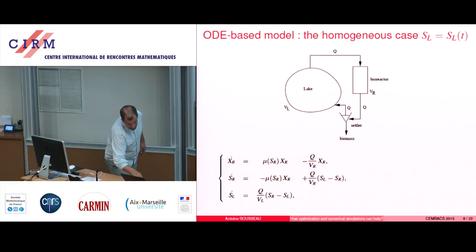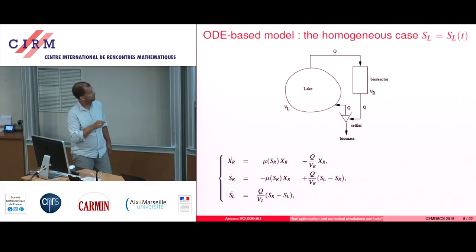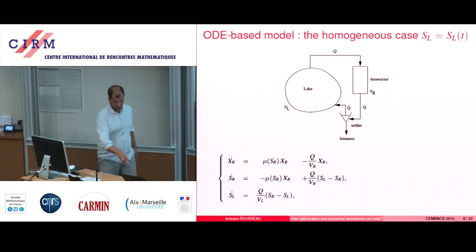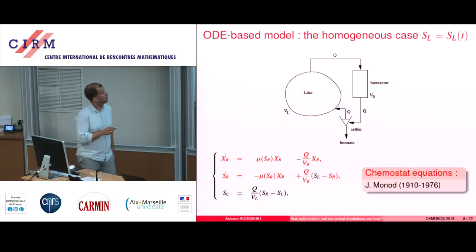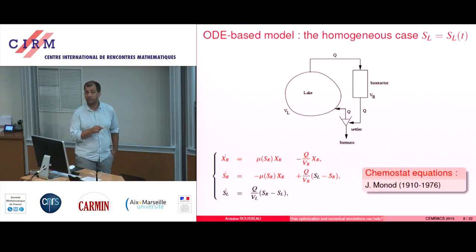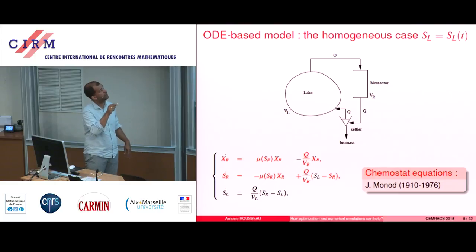And in red, you have the Chemostat equations — the classical Chemostat equations, which is only for the bioreactor.